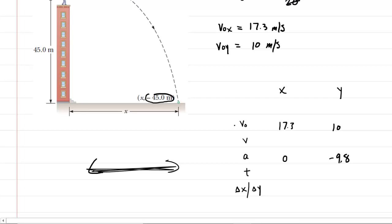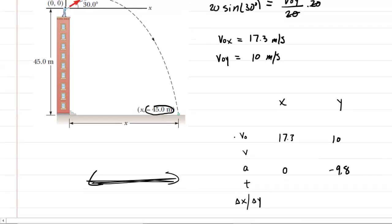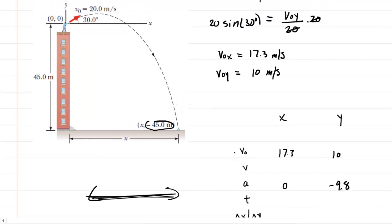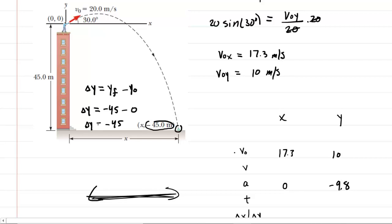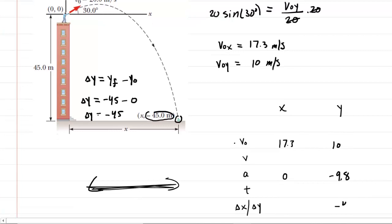Looking at the picture carefully, we can figure out the displacement in the y direction — delta y. Delta y equals the final y-coordinate minus the initial y-coordinate. The final y-coordinate is negative 45 meters, and the initial y-coordinate at the origin was zero. So the displacement in the y direction is negative 45 meters, and we put that into our table.